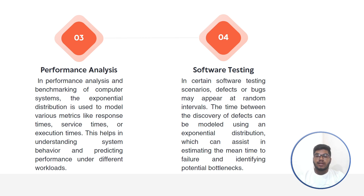In software testing, defects or bugs may appear at random intervals. The time between the discovery of defects can be modeled using an exponential distribution, which can assist in estimating the mean time to failure and identifying potential bottlenecks. Bugs can also be detected using the mean formula of the exponential distribution.